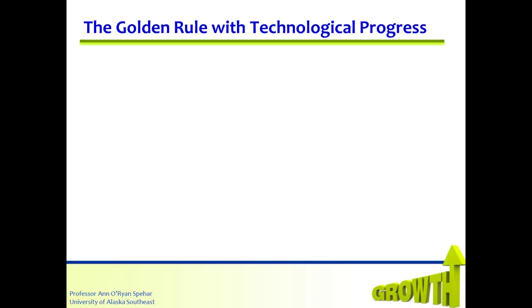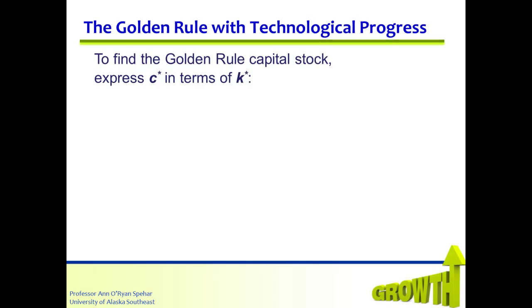Now we search for the golden rule level of capital. The golden rule level of capital will be defined as the steady state that maximizes consumption per effective worker. To find the golden rule capital stock, we express C star in terms of K star. C star — consumption at steady state — equals output at steady state, little y star, minus investment at steady state. At the steady state, investment equals break-even investment: the quantity (delta plus n plus g) times K star. So C star equals f of K star minus the quantity (delta plus n plus g) times K star.